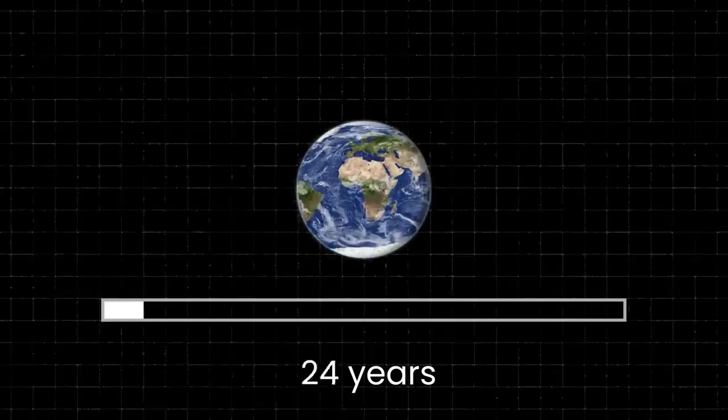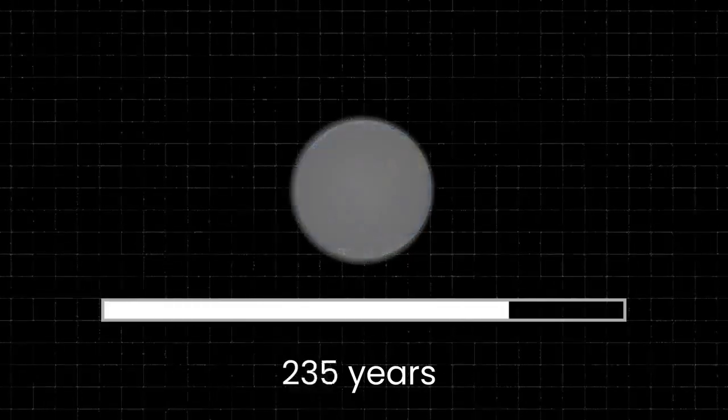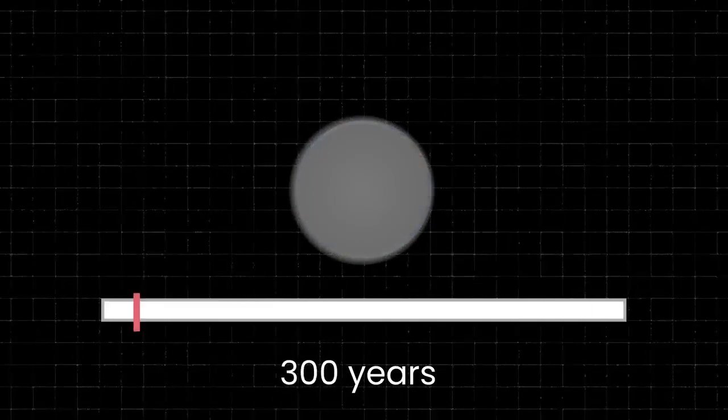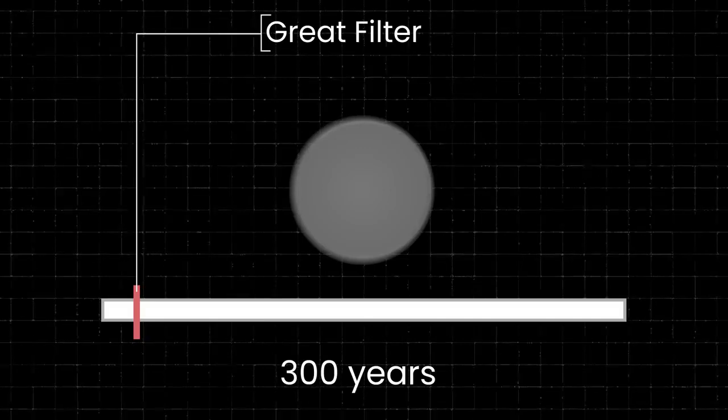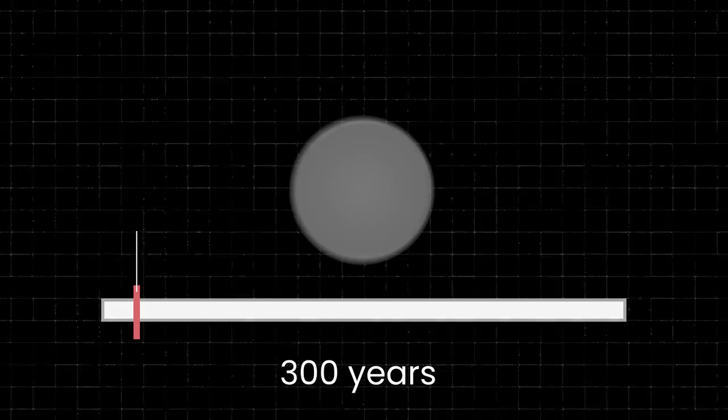According to American theoretical physicist and futurist Michio Kaku, it's estimated that humanity will be capable of consuming energy on a scale comparable to that of a Type 1 civilization within the next 100 to 300 years. But to cross this line, we have to get through the Great Filter first, a phenomenon that wipes out civilizations long before they can encounter each other.